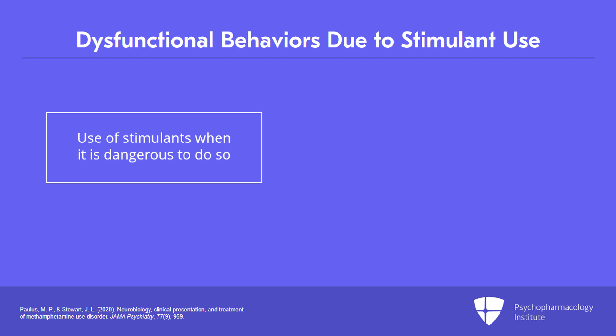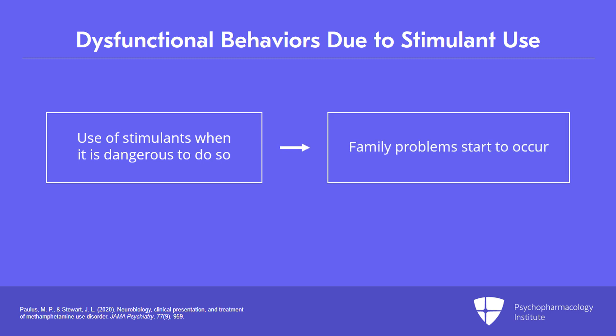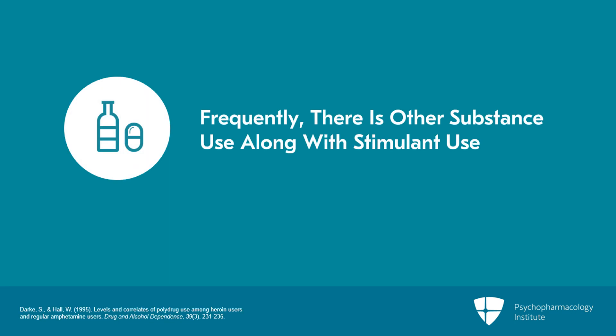Family problems start to occur because the person is focused on drug use and not the people in their lives. Frequently, other substance use along with stimulants is happening. We'll talk about how that might be important for some of the pharmacotherapies, which can target some of these other co-occurring substances.